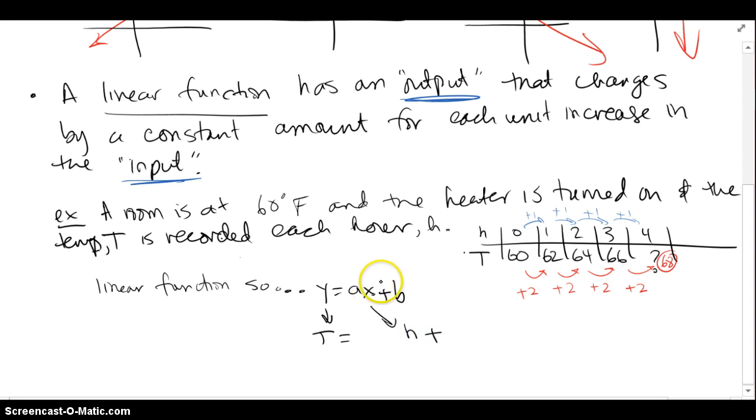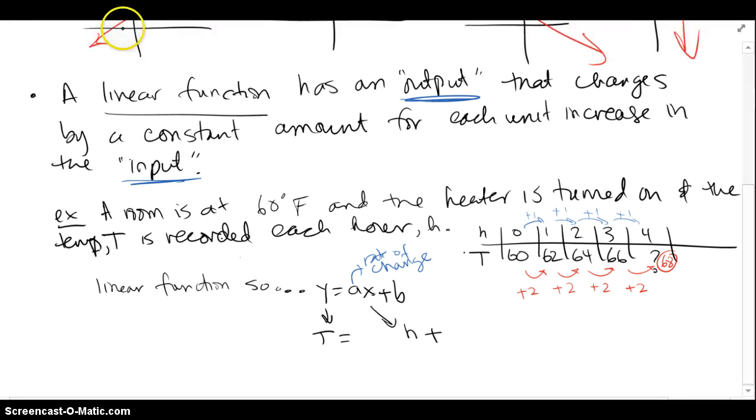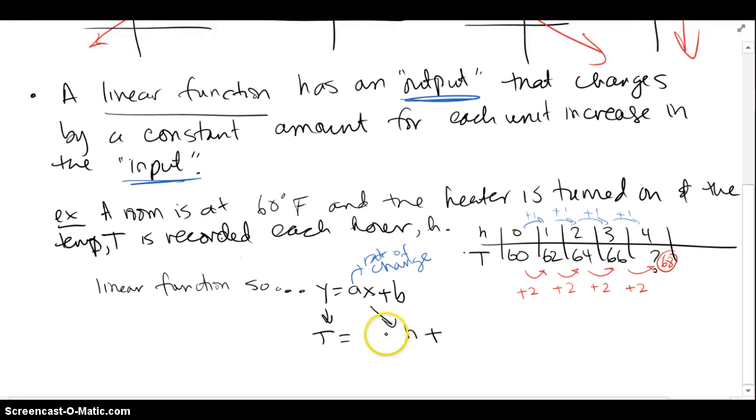Now I just have to figure out what a and b are. Well a is always going to be what's called the rate of change. And that's basically that constant change that goes on for every unit increase of the input or the x value. And in this case, that rate of change is 2, because every 1 hour, 2 degrees is what the temperature goes up by.